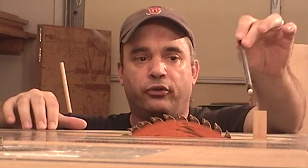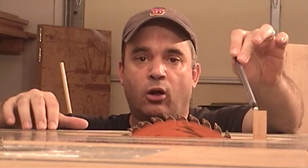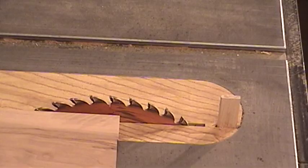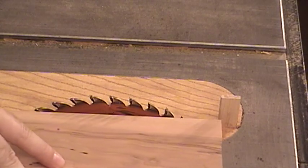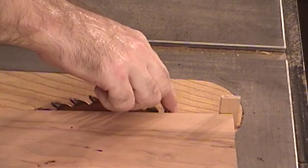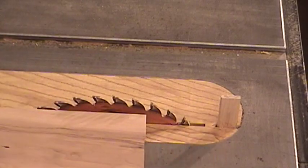A splitter on a table saw sits right behind the table saw blade and helps to prevent kickback. The splitter accomplishes this by preventing the material that you're cutting from moving behind the table saw blade and being thrown towards the operator.